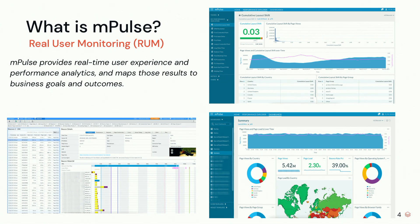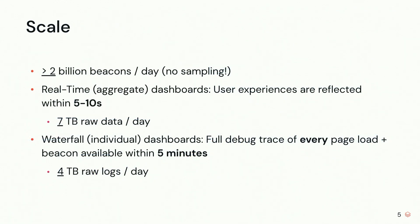We have real-time dashboards — you can see some examples on the slide here — and we provide real-time aggregate analytics to our customers. We also have trace-level and debug-level information for every single experience on any of these websites. We process over 2 billion beacons a day. A beacon is essentially a page load — after somebody loads a page, we measure it, beacon the data from the browser to the back end, and store it.